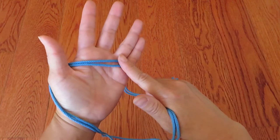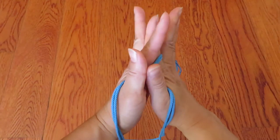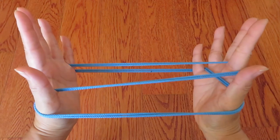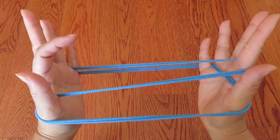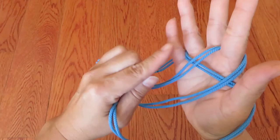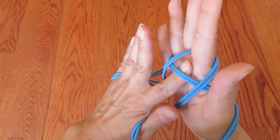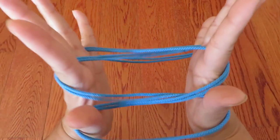With right hand, the pointer pick these double strings and stretch to the side. And with left hand pointer, pick this double string in between two vertical double strings like this and stretch.